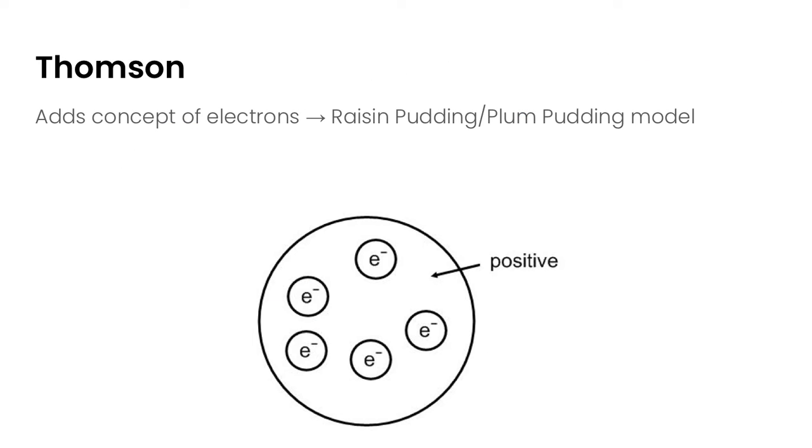Next in our timeline is the work from J.J. Thompson. He did some experiments, and the result of his work showed the existence of electrons. He's added the concept of electrons to our understanding of the atomic model.